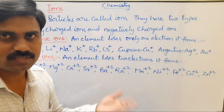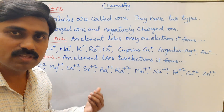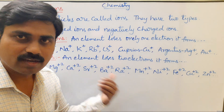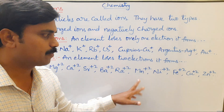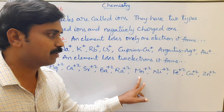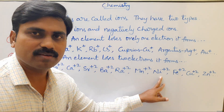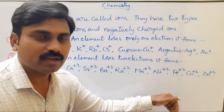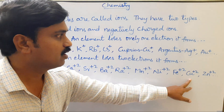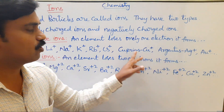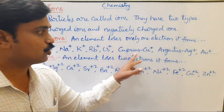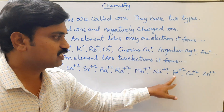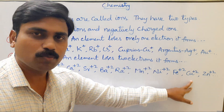Not only Group 2 elements, but some d-block elements also form di-positively charged ions: manganese ion Mn²⁺, nickel ion Ni²⁺, ferrous ion Fe²⁺, cupric ion Cu²⁺. Note that Cu⁺ is cuprous ion and Cu²⁺ is cupric ion.